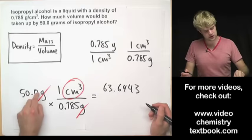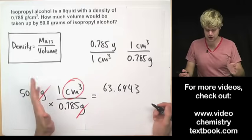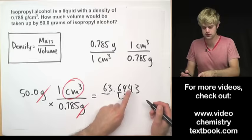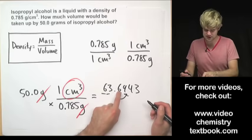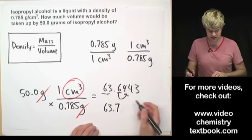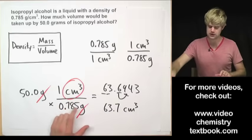Three sig figs here, three sig figs here, this is a counting number so it doesn't matter. So rounding the answer to one, two, three significant figures, look to the nine, the six goes up to seven, so I get 63.7 and the units are cubic centimeters.